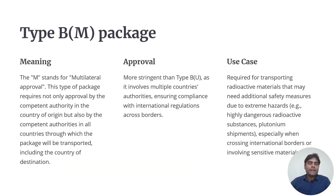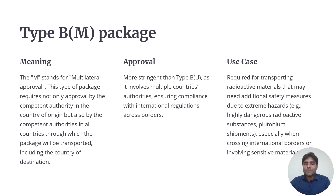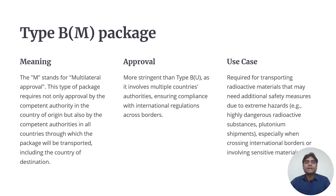Type BM packages — M stands for multilateral — require approval not only by the competent authority in the country of origin but also by competent authorities in all countries through which the packages will be transported, including the country of destination. The approval process involves multiple countries' authorities, ensuring compliance with international regulations across borders. These packages are required for transporting radioactive material that may need additional safety measures due to extreme hazards, for example plutonium shipments crossing international borders involving sensitive materials.